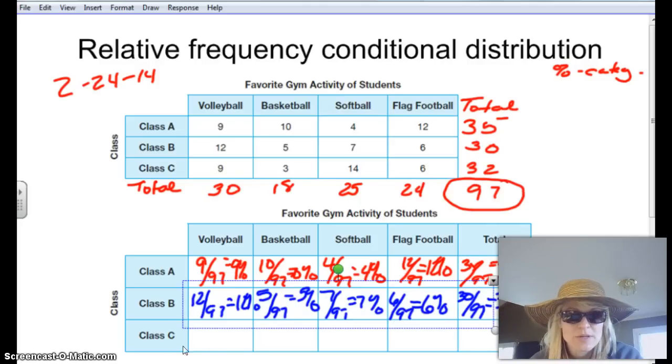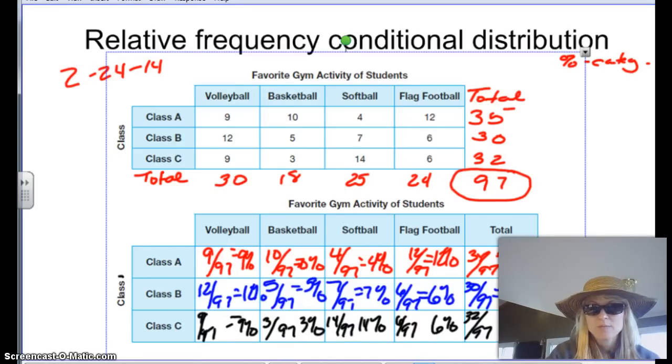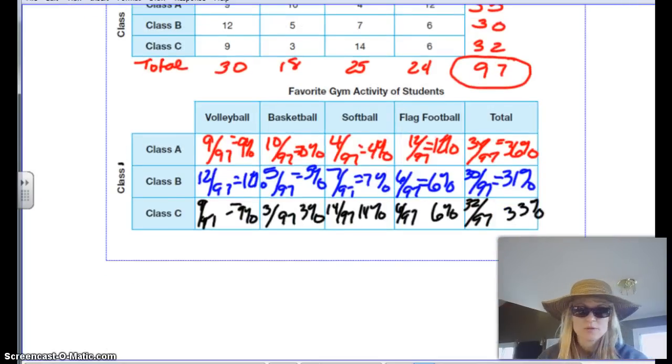So I want you to pause the video and figure out C on your own. So pause it and do it. So if we did this correct, we should have 9% for volleyball, 3% for basketball, 14% for softball, 6% for flag, and then 33% for the total.